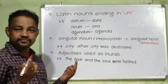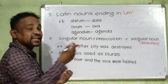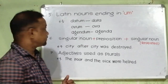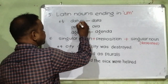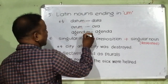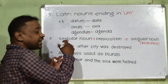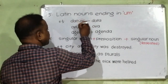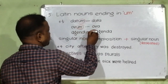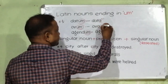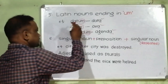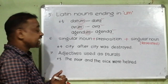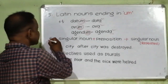Rule number five: Latin nouns ending in -um. There are some nouns that end in -um, like datum, album, and agentum. When we change them into their plural forms, we have to leave out -um and add -a. The plural form of datum is data, opum is opera, and agenda means agenda.